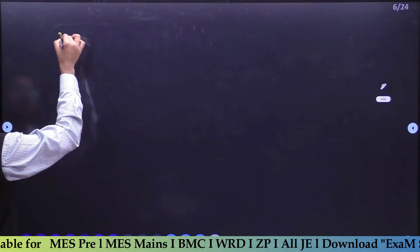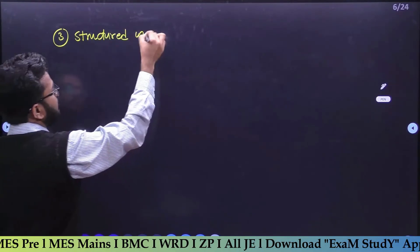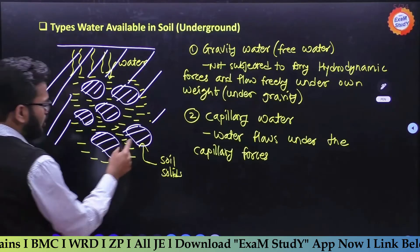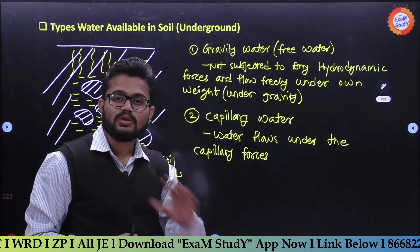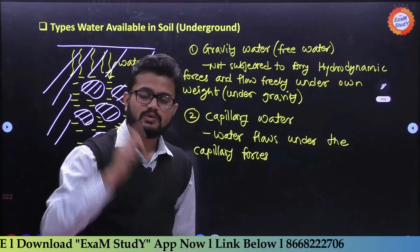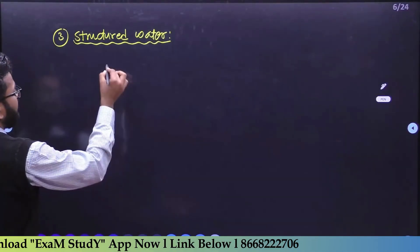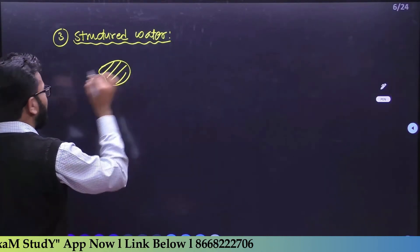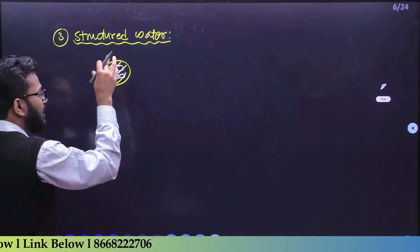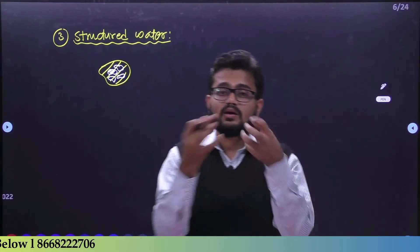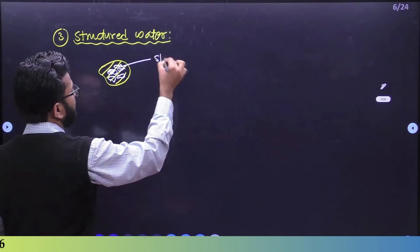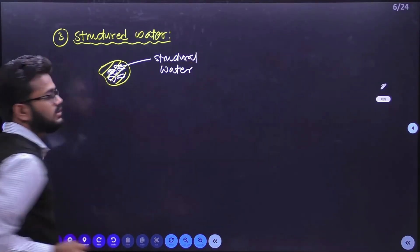The third type of water is called structured water. In soil, the solid particles are minerals. Between soil solid particles, some water molecules are chemically bonded - structurally combined with the solid particle through a chemical bond. This water established within the solid particle structure is called structured water.